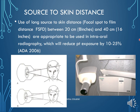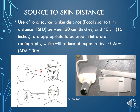Source-to-skin distance refers to the distance from where x-rays are generated to the patient's skin. It is important to use a long source-to-skin distance (also called focal spot to film distance) of between 20 cm and 40 cm (8 to 16 inches). A long cone reduces patient exposure by 10 to 25%. A shorter cone exposes the patient to a larger field of radiation compared to a longer cone, which exposes a smaller area.